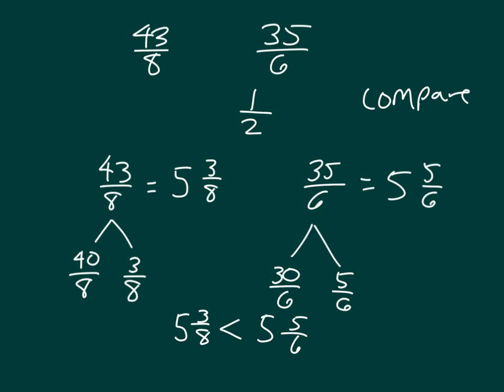Therefore, 43 eighths is less than 35 sixths. That's what we are comparing here. Read that with me again. 43 eighths is less than 35 sixths.